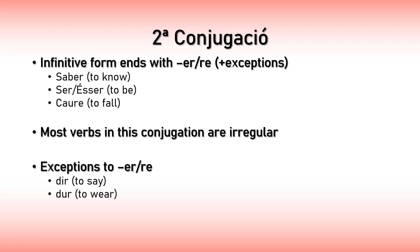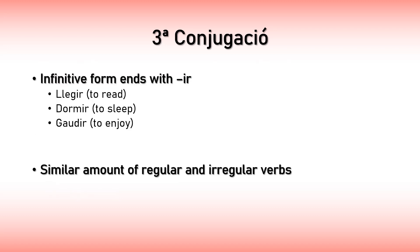In the first conjugation, basically all verbs were regular. In the second conjugation, however, many verbs are irregular. There are also a couple of words that belong to the second conjugation but don't end in RE or ER, which are dir (to say) and dur (to wear). For the third conjugation, it ends with IR in the infinitive. Examples are llegir (to read), dormir (to sleep), and gaudir (to enjoy). More or less half of the verbs in this conjugation are regular and the other half irregular.